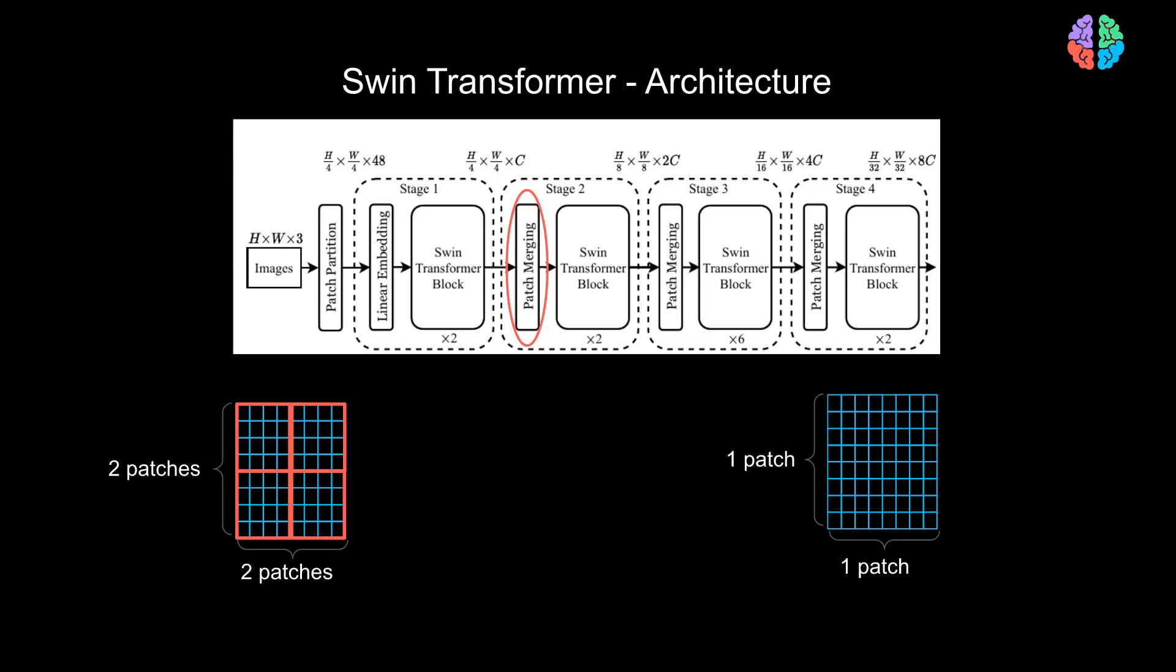Now, in patch merging, you take the 2 by 2 neighboring patches and merge or combine them together so that you get one patch in place of the 2 by 2 patches. But how do you implement patch merging?